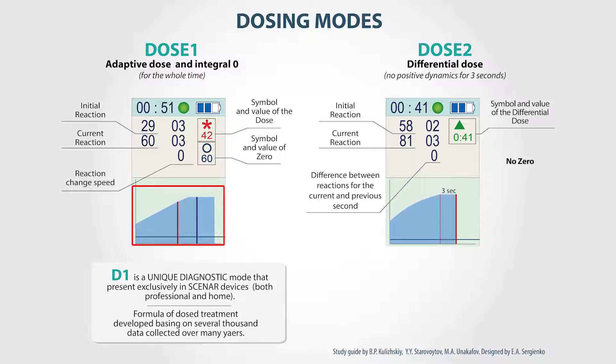In this case, the initial reaction is the lowest point, and here we can see how it grows up. Under the reaction value, we can see the parameter which is called the reaction change speed.